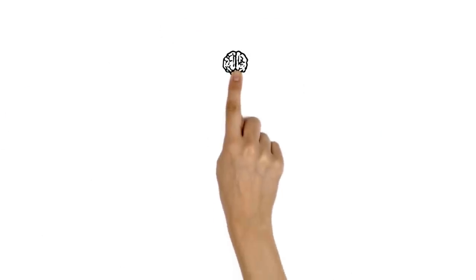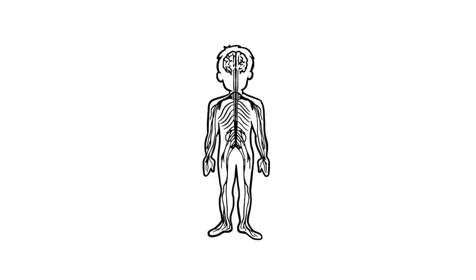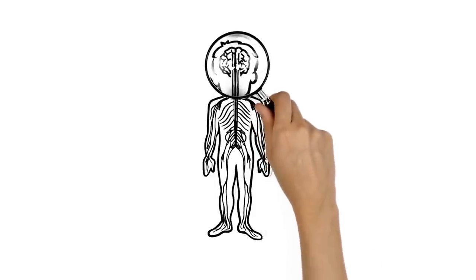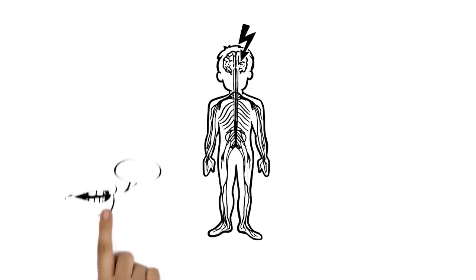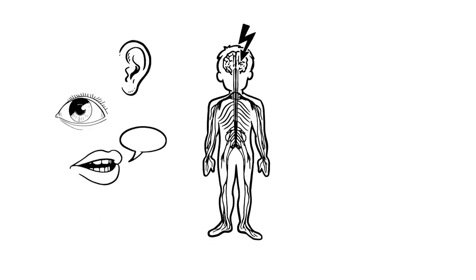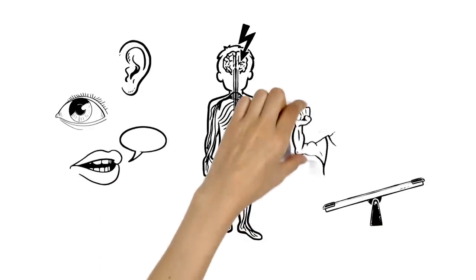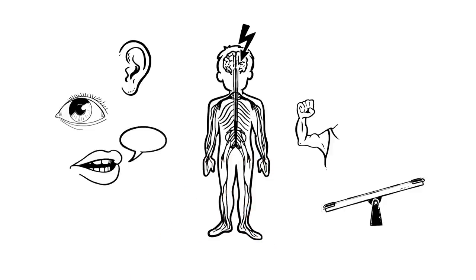As our brain controls the whole body, there are a great variety of different effects of stroke, depending on the area of the brain that is damaged. They can include difficulties with speaking, seeing or hearing, balance and coordination problems, muscle weakness, confusion or memory loss. All these symptoms can occur suddenly within minutes.